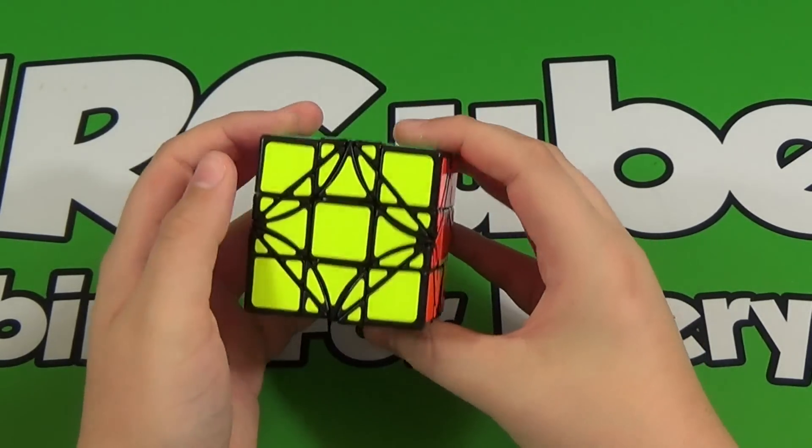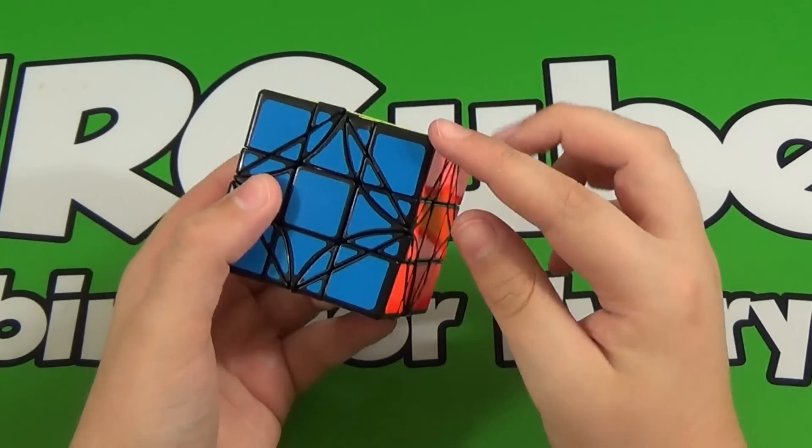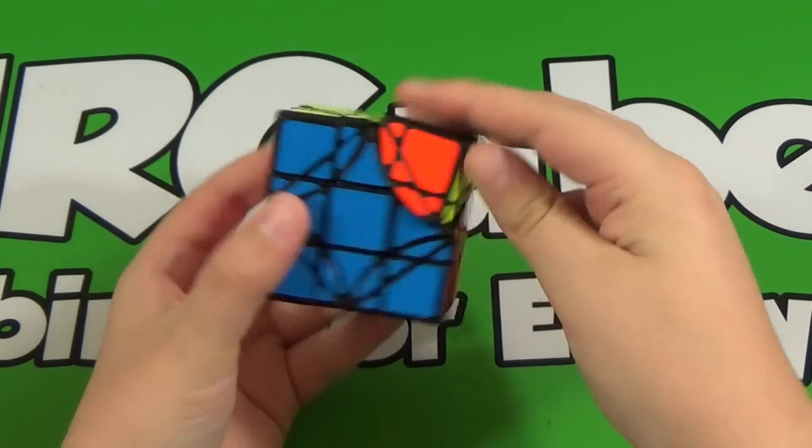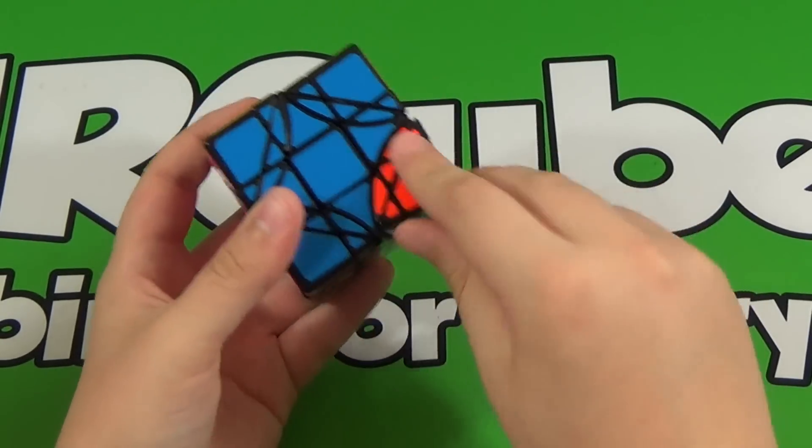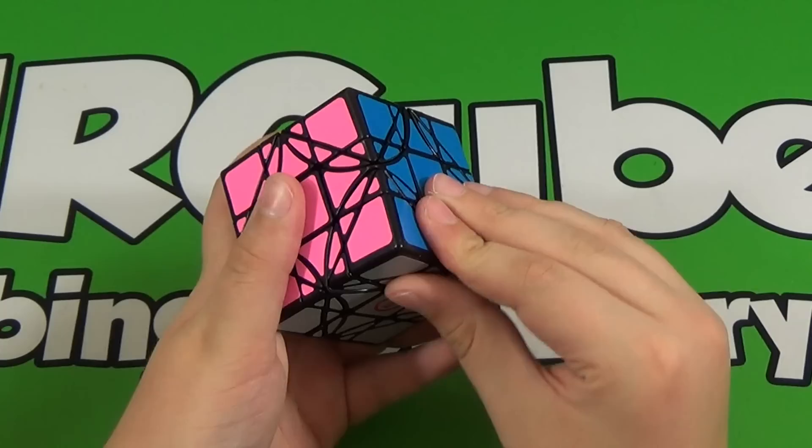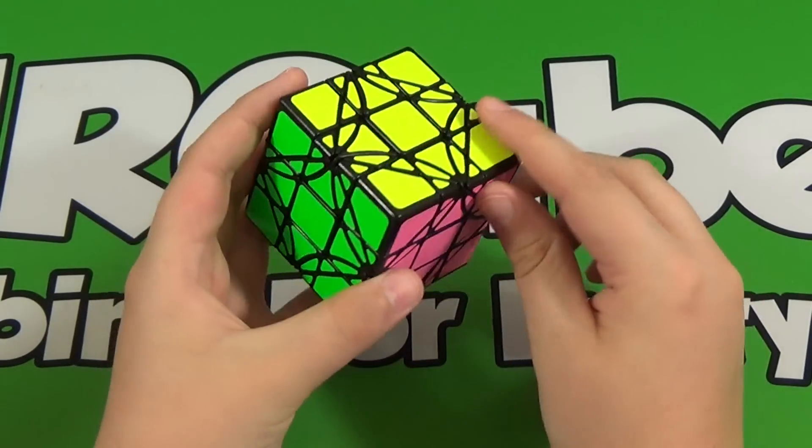But it would be pointless if it was just a 3x3. There is other functions, and that is that the corners can actually rotate like this. And wow, that's cool. These actually are really smooth as well. And so that adds for added functionality as well as shape-shifting.